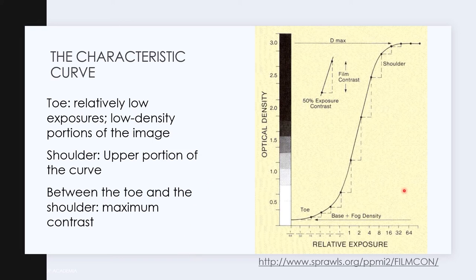Contrast here is the density difference produced by a specific exposure difference. At the toe region, in this part of this curve, we have little or no contrast is transferred to the image.